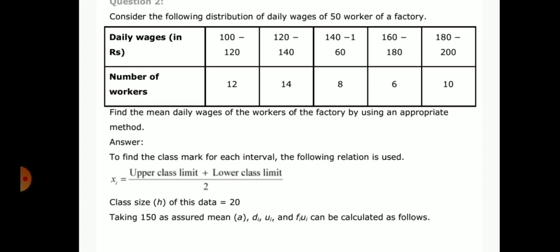Answer: To find the class mark for each interval, the following relation is used. Class mark equals upper class limit plus lower class limit divided by 2. For example, 100 plus 120 divided by 2, 120 plus 140 divided by 2. The class size of this data is 20.